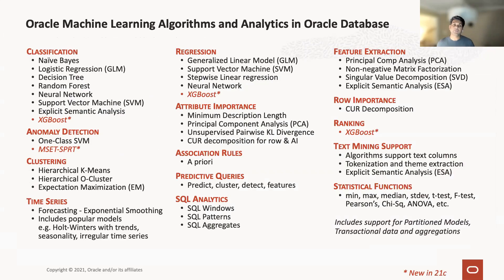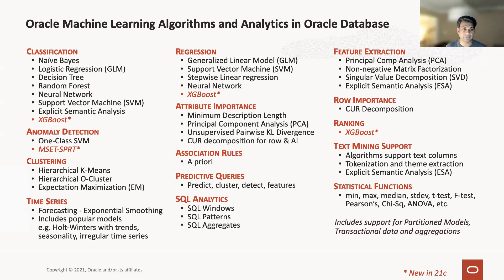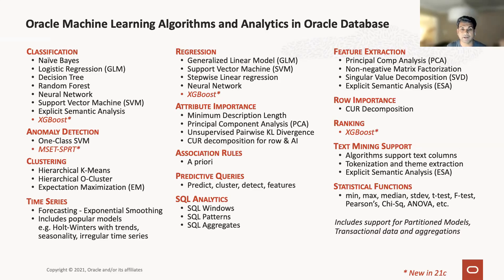These are all the algorithms that are available — the various kinds of classification. For a person working in the data science space, they ask: what are your algorithms, what are the kind of things I can do with your framework? The new stuff in 21c is in the next couple of slides, but the existing algorithms include mainly classification, regression, clustering, anomaly detection, and time series. A lot of work is also going to the statistical functions as well as feature extraction. You don't even need to build ML models — you can write statistical functions or feature extraction to do some basic attribute importance work.